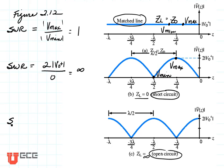Let's see what it is for an open-circuited line. Here's our Vmax and here's our Vmin. Once again, this is 2V0+ divided by 0, so the standing wave ratio for an open-circuited line is infinity.